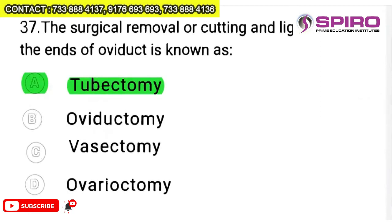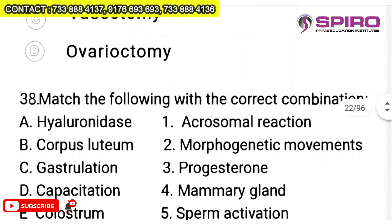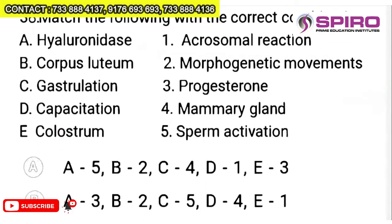Question 37: surgical removal or cutting and ligation of ends of oviduct is known as tubectomy — straight answer. For match-the-following questions, always go for the answer you know thoroughly first, then browse the options — you will not miss and will correctly identify the match.